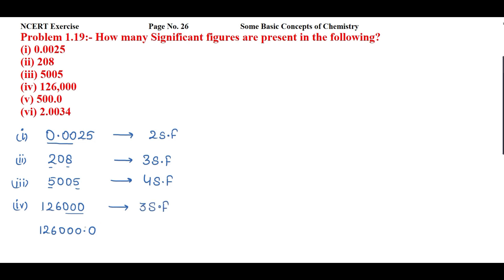If I am having a zero on the right side of the decimal, that zero is significant in nature. In that case, the zeros present between two significant figures are always significant. So there would be 1, 2, 3, 4, 5, 6, 7 — seven significant figures.